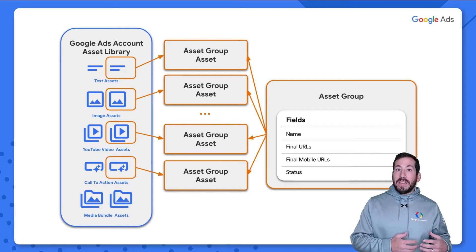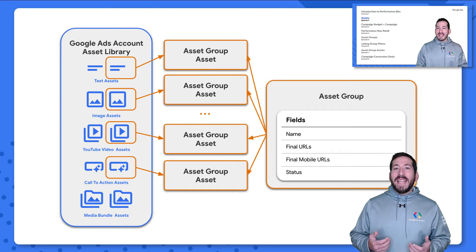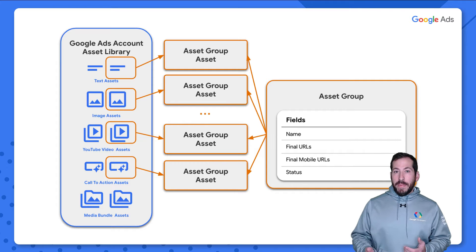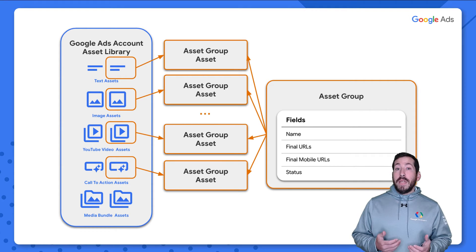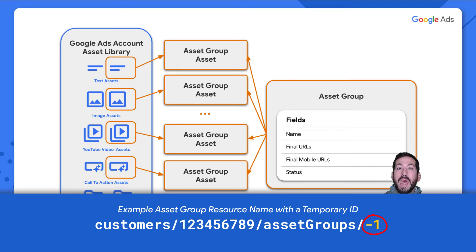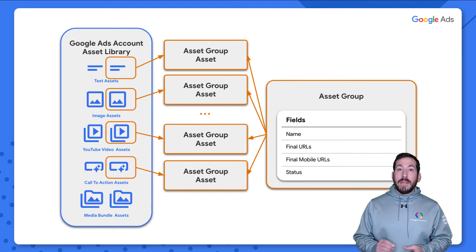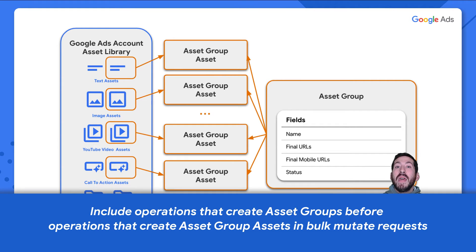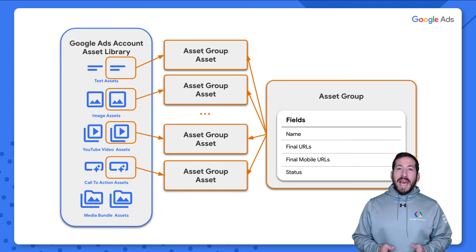That means we have a reference in the asset group assets to both our assets and our asset groups. In episode 2 we created assets in a prior, completely separate independent request, so we can use the asset resource name of that existing asset. However, asset groups are part of the same bulk mutate request, so those resources don't yet exist. We'll create a temporary ID, use that to create a temporary resource name, and that's the resource name we'll use in our asset group assets. Always include asset group operations prior to the asset group asset operations that reference them.